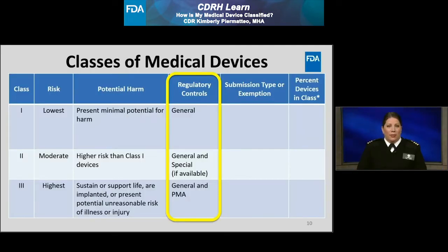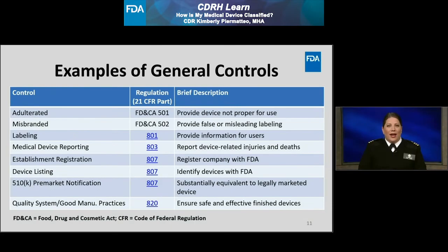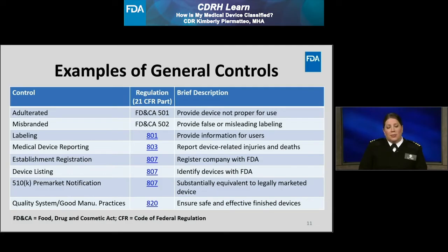Regulatory control increases from Class 1 to Class 3. Devices in all three classes are subject to general controls unless exempted by the regulations. In addition to complying with general controls, Class 2 devices may also be subject to special controls. Class 3 devices must comply with general controls as well as premarket approval controls. Examples of general controls include requirements for companies to register their establishments and list their devices with the FDA, manufacture devices in accordance with good manufacturing practices, and label their devices in accordance with FDA's labeling regulations. If a device is exempted from a specific general control, such an exemption would be stated in the classification regulation for that particular device.